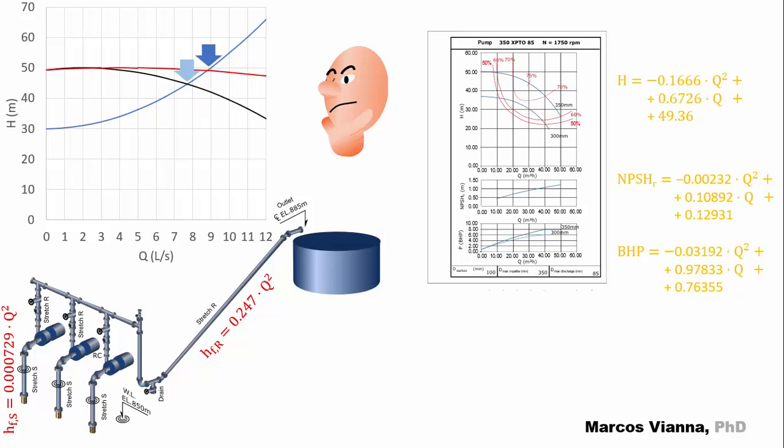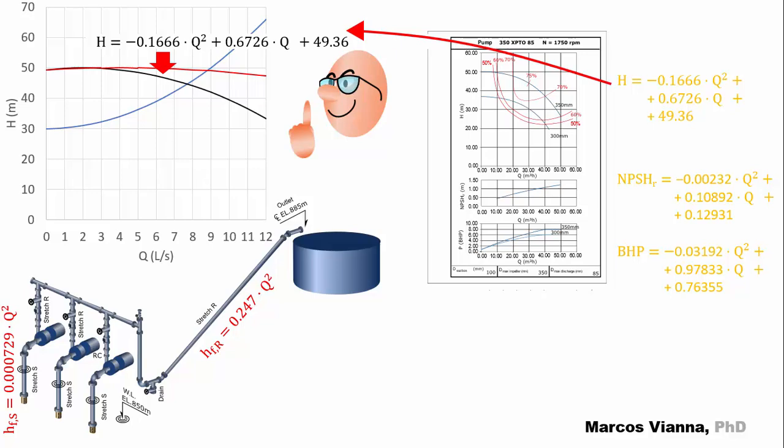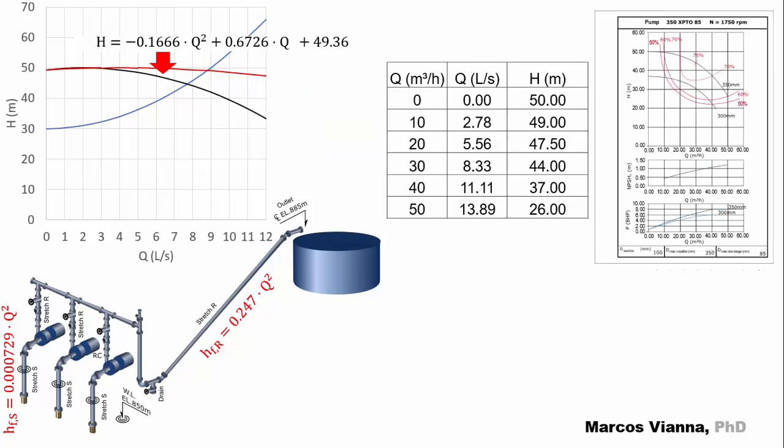We can squint our eyes to find this new operating point. The flow would be 8.9 liters per second, maybe. Or we can calculate it algebraically, as we have done in the last videos. This is the equation that we found for one pump alone. Let's find the equation for two pumps in parallel.